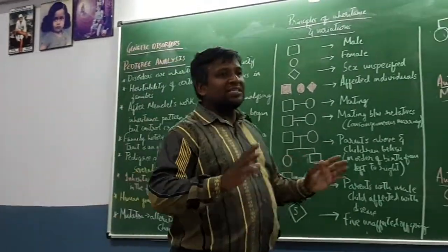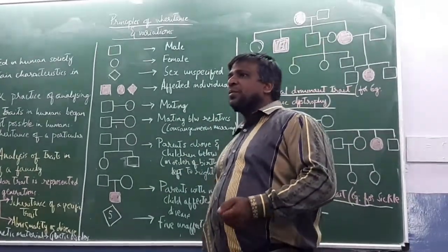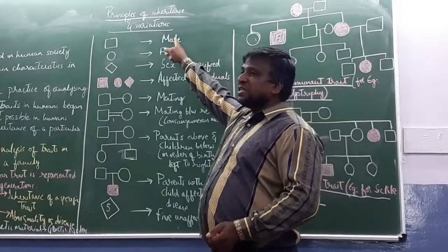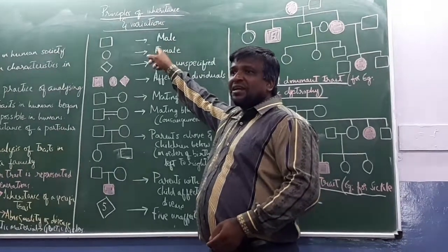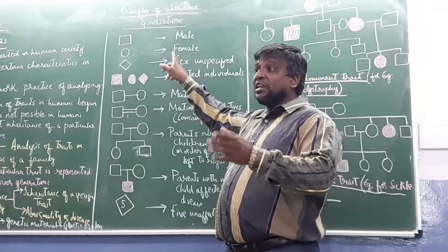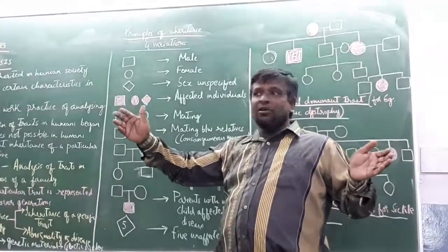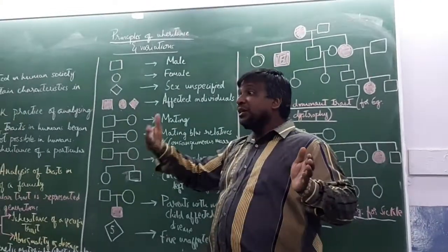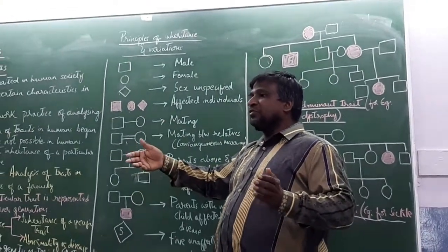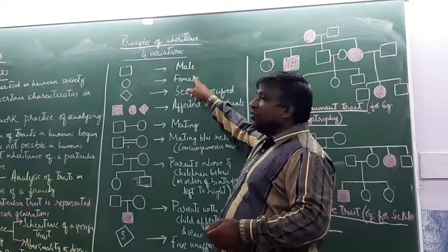Now if you look into the pedigree analysis chart, certain symbols are there which are very simple you should remember. The square symbol represents male. Circle represents female. Even in your practical book you have this pedigree analysis chart. You should study them.